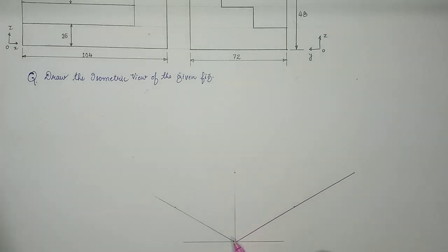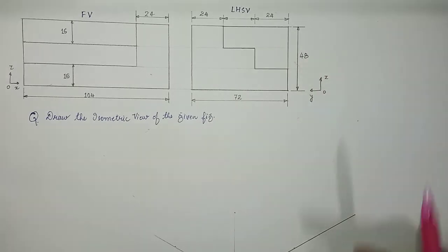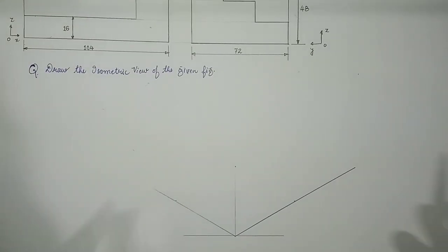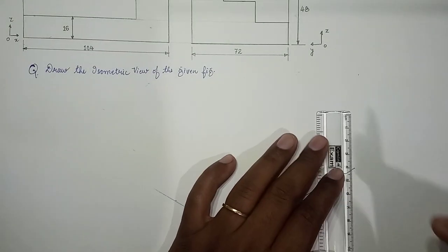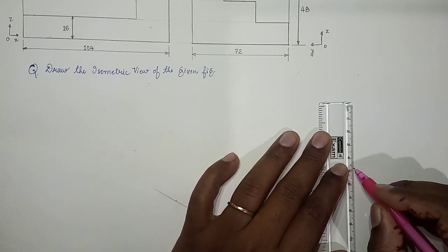What is the height? The height is 48, that is visible in the side view. So height is 48, so we can mark 48 along this line. We have made 48.